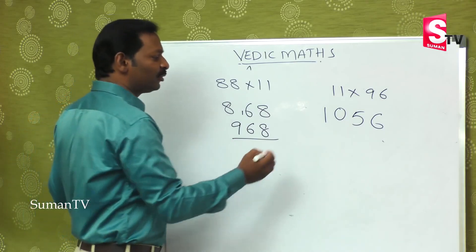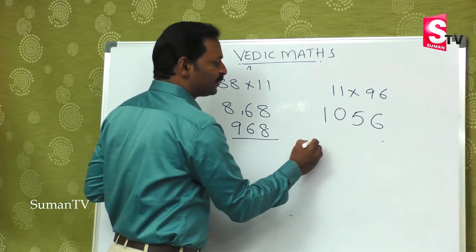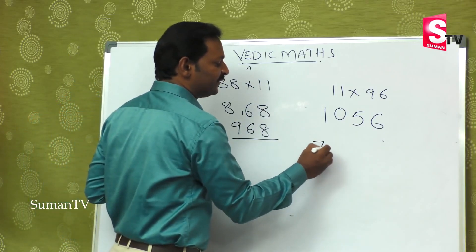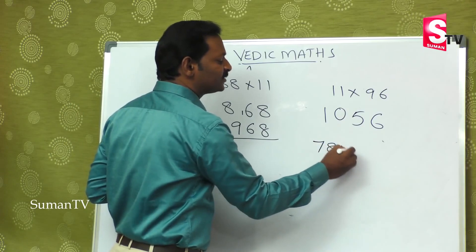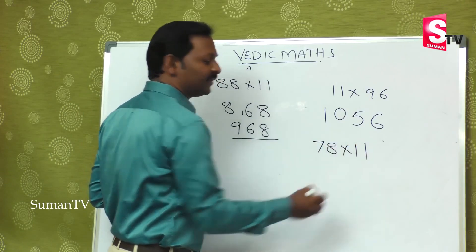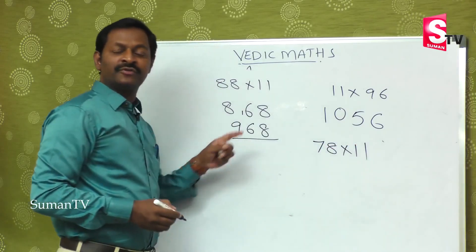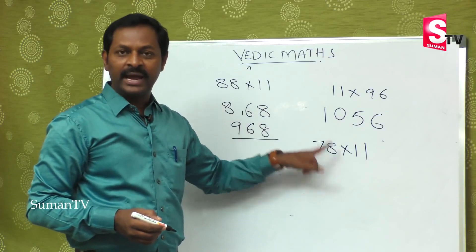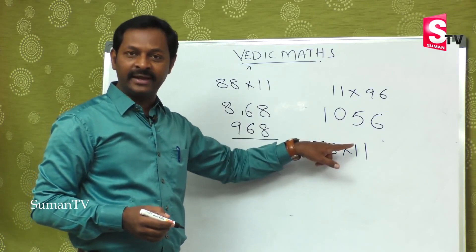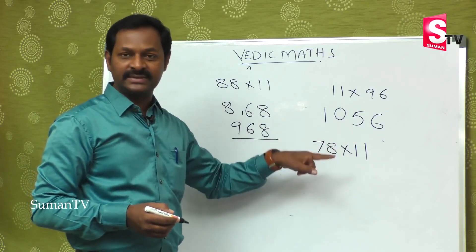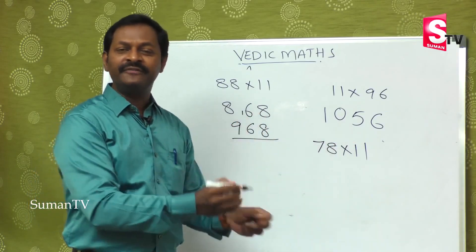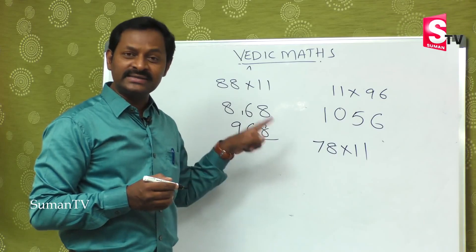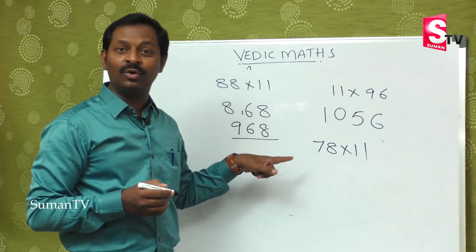Let's take one more number: 78 multiplied by 11. First number is 7, last number is 8. When you add 7+8=15. Since 15 is a 2-digit number, the 1 carries back and adds to 7, giving 8. Place 5 in the middle. The answer is 858.